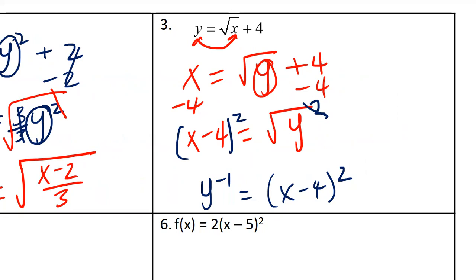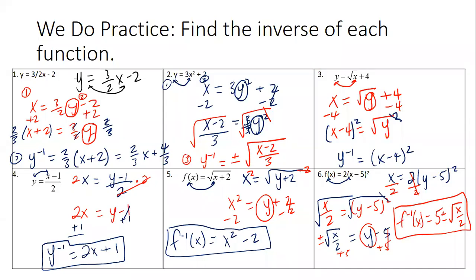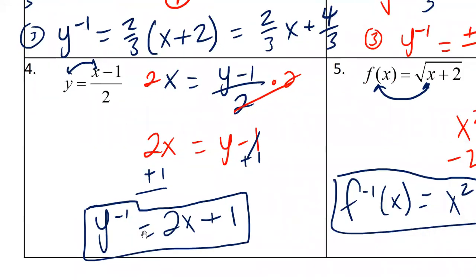Try the last three, then we'll check them. On number four, you had division — the opposite is multiplication — so multiply both sides by 2, giving 2x = y − 1. Then add 1 to both sides; y is now by itself. The inverse equals 2x + 1.